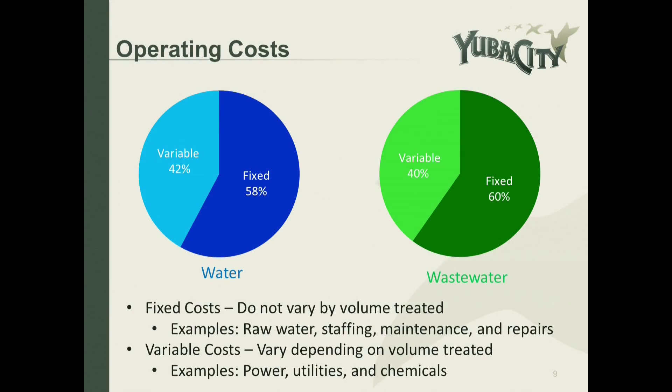When you look at operational needs, they're comprised of three areas: operating costs, debt service, and capital investment. Operating costs are comprised of fixed costs that do not vary by the volume treated, and variable costs, which vary depending upon the volume treated. You can see that the split is very similar between water and wastewater.